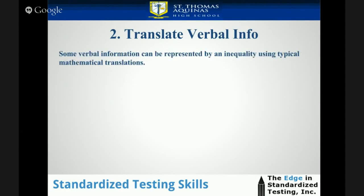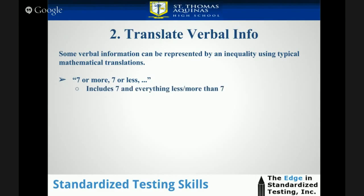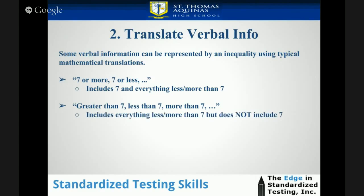Some verbal information can be represented by an inequality using typical mathematical translations. For example, 'seven or more' or 'seven or less' means you're going to include seven and everything less or more than seven — the key word being including seven. 'Greater than seven,' 'less than seven,' 'more than seven,' et cetera, means include everything less than or more than seven, but not including seven.